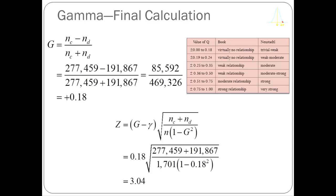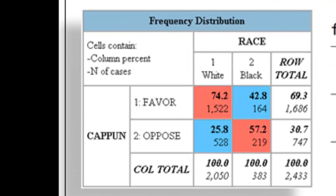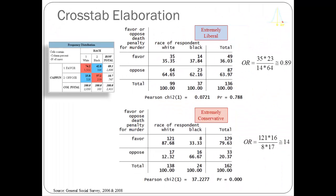The last thing I want to introduce is the notion of cross-tab elaboration — also called contingency table elaboration or post hoc statistical control. For example, when we look at the relationship between race and capital punishment, white respondents overwhelmingly favor capital punishment compared to black respondents. Someone might reasonably argue that this difference might shrink or disappear if we control for how liberal or conservative they are.